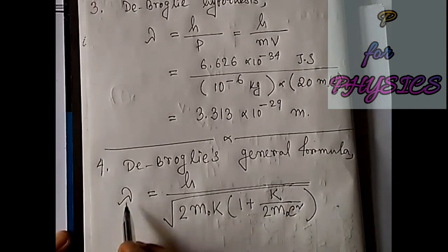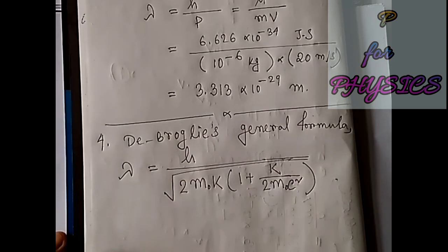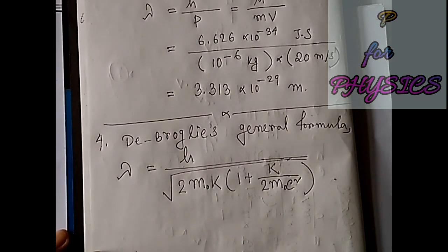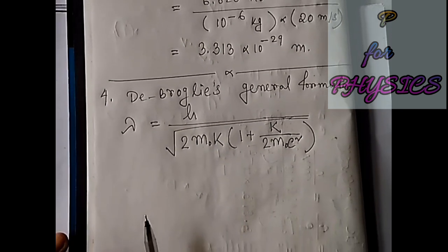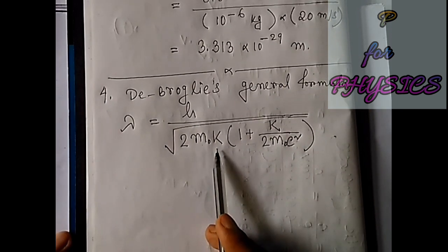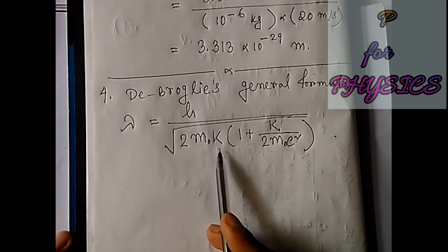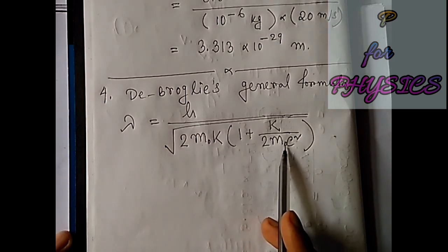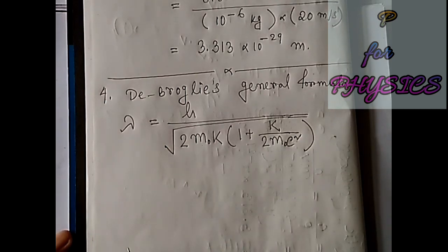Here lambda is the wavelength of the material particle, h is Planck's constant, m₀ is the rest mass of that particle, K is the kinetic energy of the particle, and c is the speed of light. If we put those values into this equation, we will have the value of lambda.